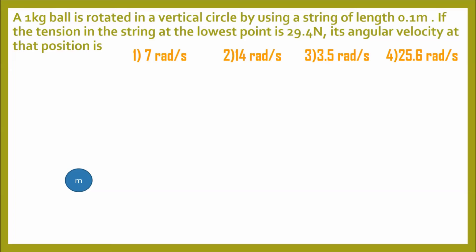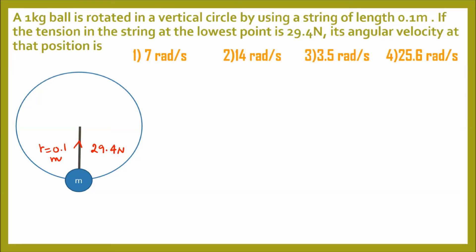Next question: a 1 kg ball is rotated in a vertical circle using a string of length 0.1 meter. If the tension in the string at the lowest point is 29.4 N, find its angular velocity ω at this position. The options are 7 rad/s, 14 rad/s, 3.5 rad/s, and 25.6 rad/s.